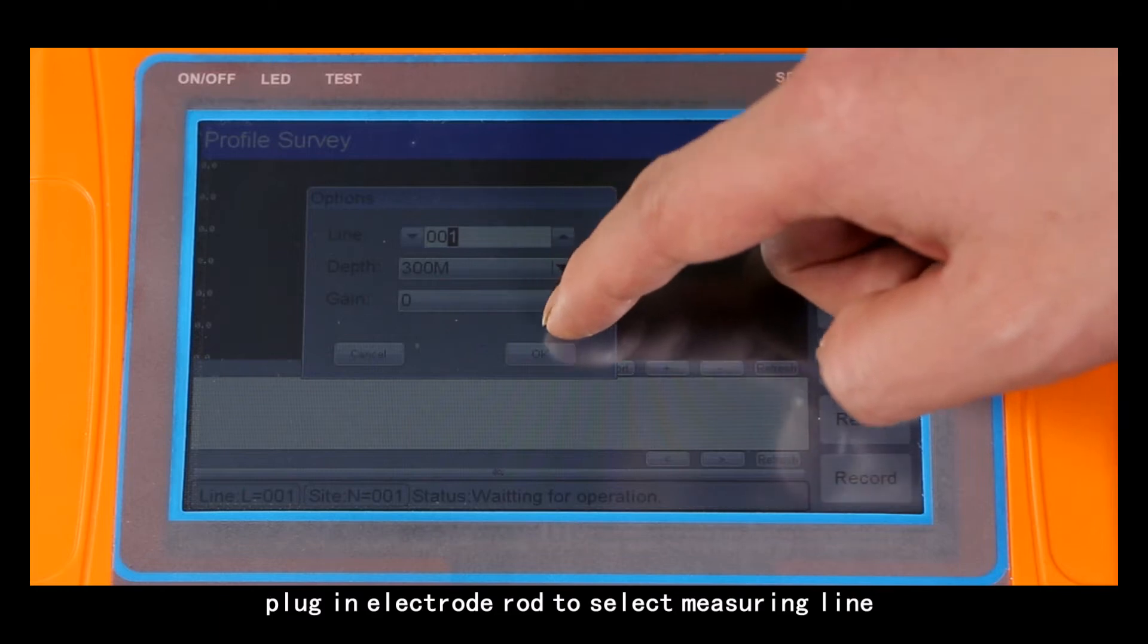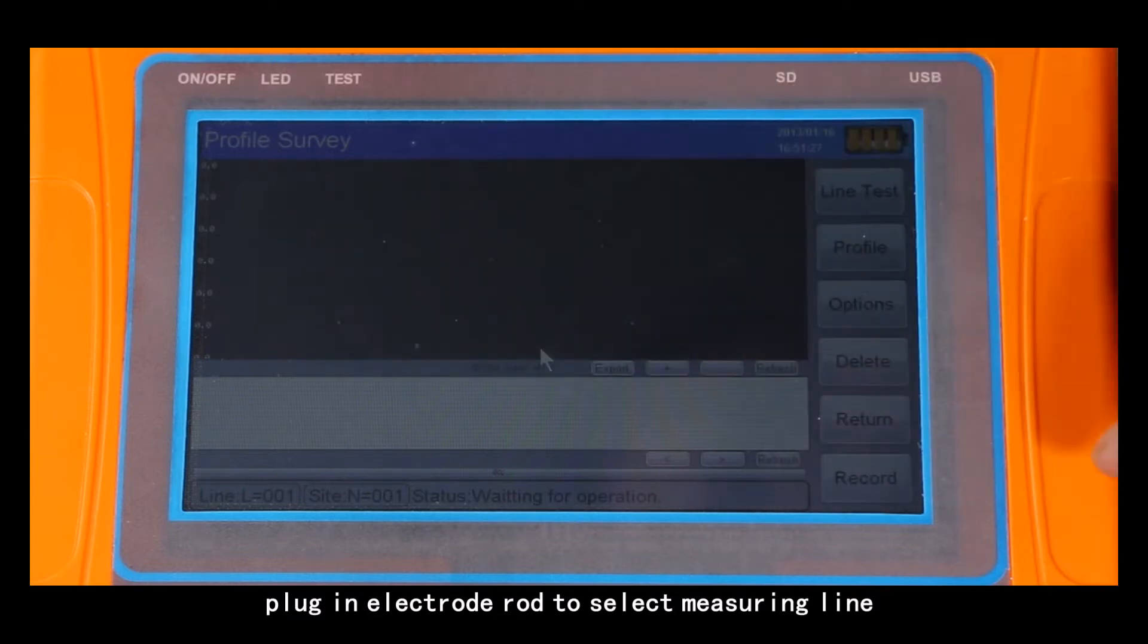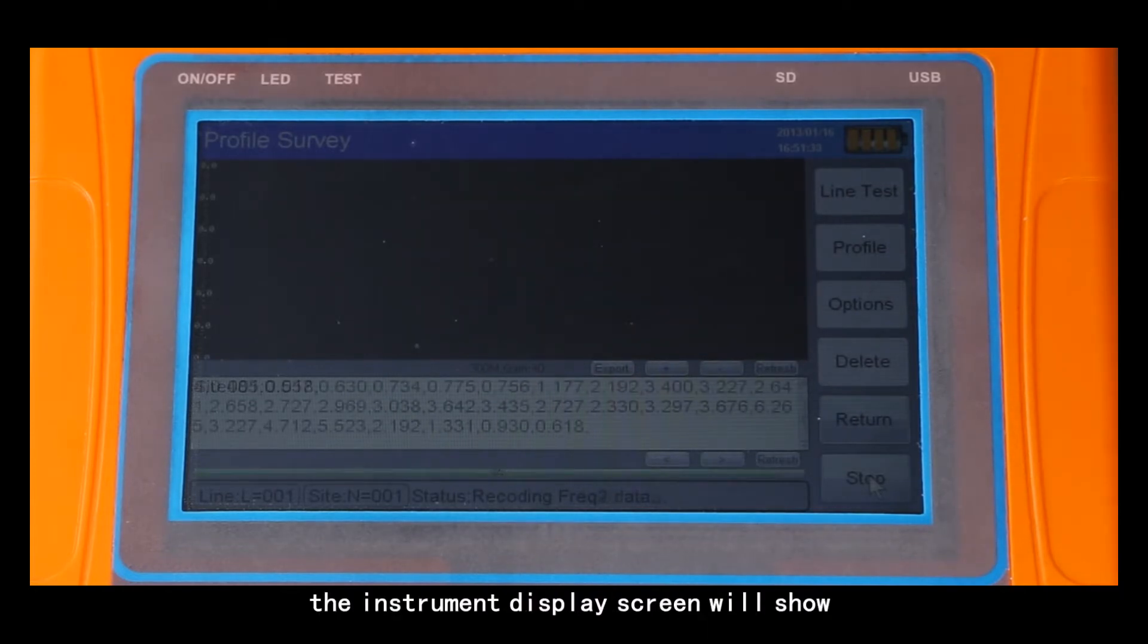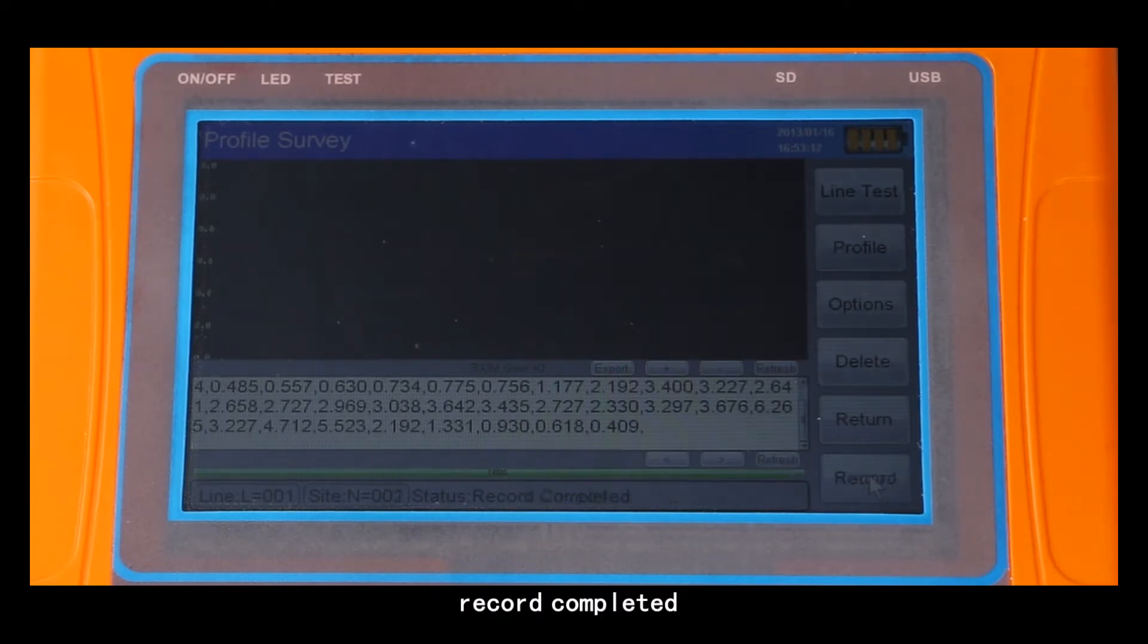Plug an electrode rod to select a measuring line. Click record for recording. After data collection, the instrument display screen will show record completed with a reminder sound.